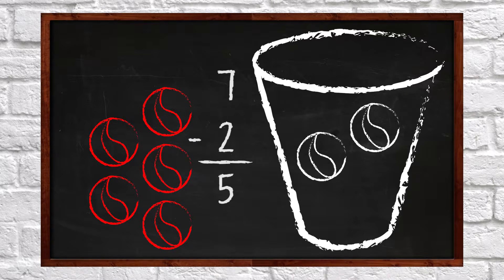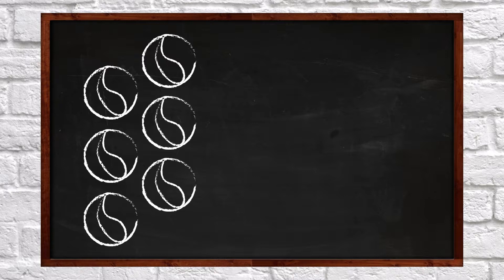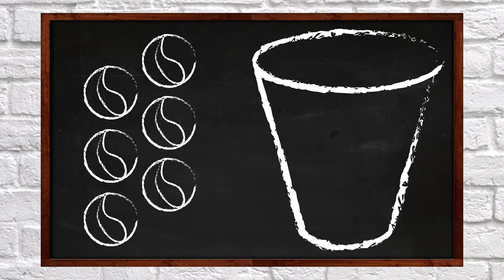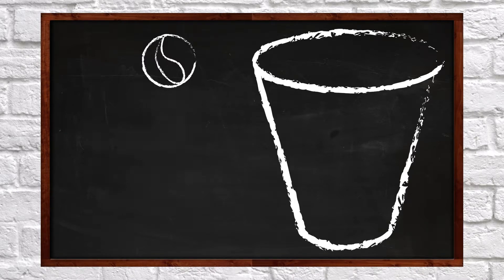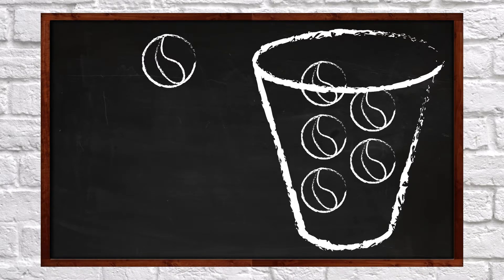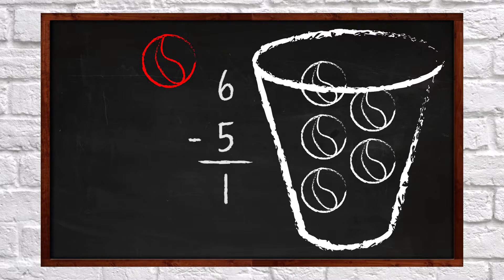Here is one more example. We have six marbles. If I subtract five of the marbles, then I have one marble left. We write it like this: six minus five equals one.